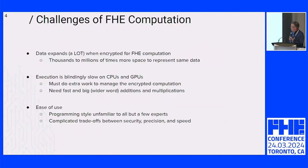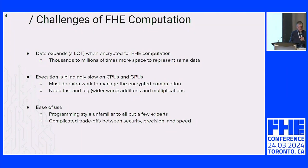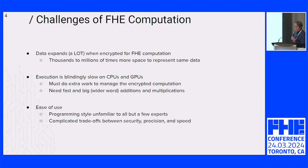The way we view the problem is that the challenges are threefold. One is that data expands a lot when encrypted for FHE computation. In the standard parameters we're using for BGV and CKKS, we're seeing ciphertext in the 20 megabyte range for plaintext precision in the 20-bit range — that's to achieve 128-bit security and reasonable depth. So lots more space to represent the same data.